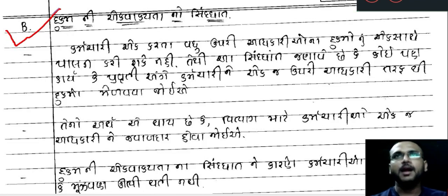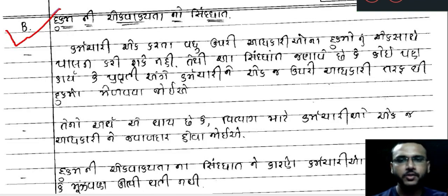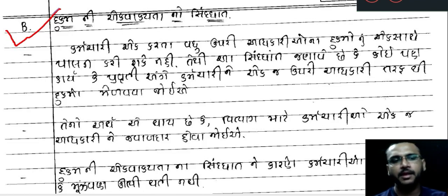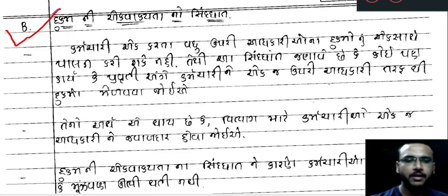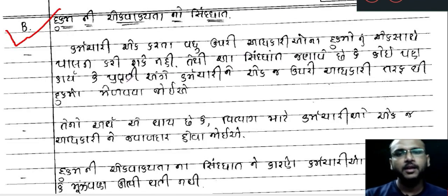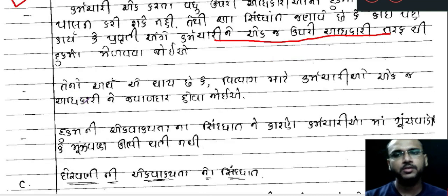દાખ્ત-ઠ-તા-ઠ-ઈ-ઉ-ઠ-ઉ - બ-ઠ-ઉ-ઈ-ઠ-ઉ-ઉ-ઈ-ઠ-ઉ-ઈ - ઉ-ઈ-ઠ-ઉ-ઈ-ઠ-ઉ-ઈ ઉ-ઠ-ઈ-ઉ-ઠ-ઈ - ઠ-ઉ-ઈ-ઈ-ઈ-ઠ-ઉ-ઠ-ઉ-ઉ-ઠ-ઈ-ઉ. ઠ-ઉ-ઠ-ઉ-ઈ-ઠ-ઉ-ઠ-ઈ: કર્મચારીને એક જ ઉપરી અધિકારી તરફથી હુકામ મળવો જોઈએ.